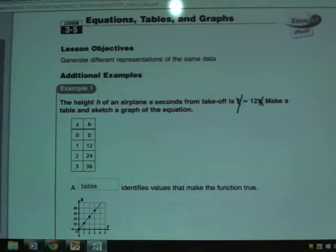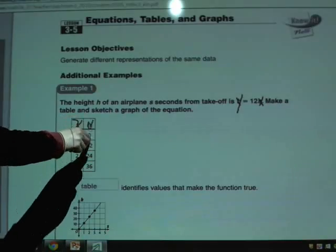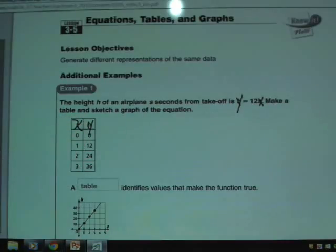Alright, so we'll make that same change down here in our table, x's and y's. Now, as far as me picking some x's, I just picked 0, 1, 2, and 3. Why? Because I can. You can pick any numbers you want for x. Just remember,